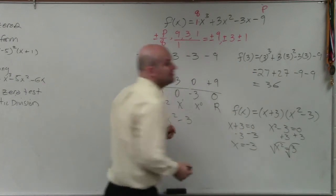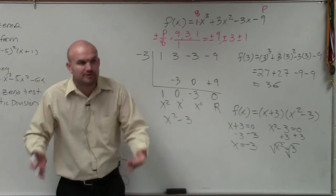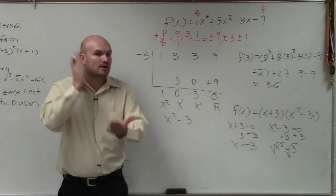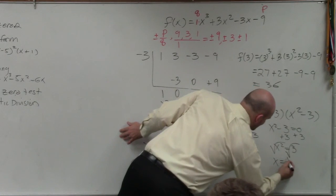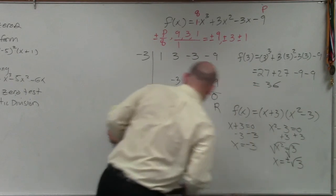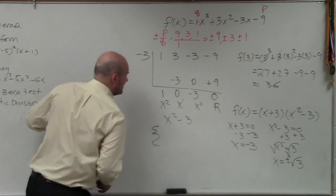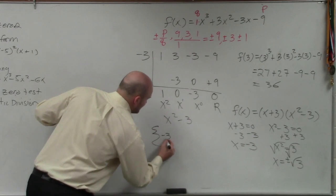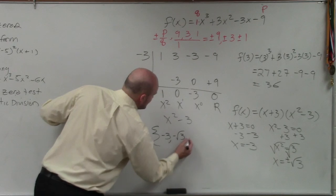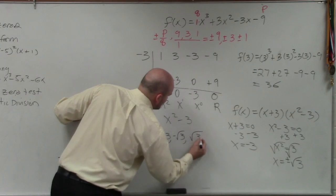Take the square root. Take the square root. Please remember, whenever you introduce the square root, you have to take plus or minus. So x equals plus or minus the square root of 3. Therefore our zero set is negative 3, negative square root of 3, positive square root of 3.